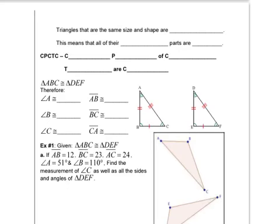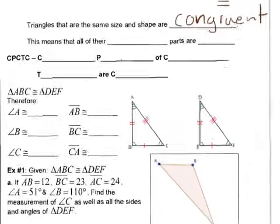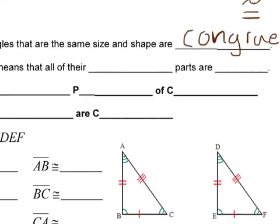So triangles that are the same size and shape are congruent. Or you could use the congruent symbol, which I like to do. This means that all of their corresponding parts — the parts that correspond to each other — are congruent.